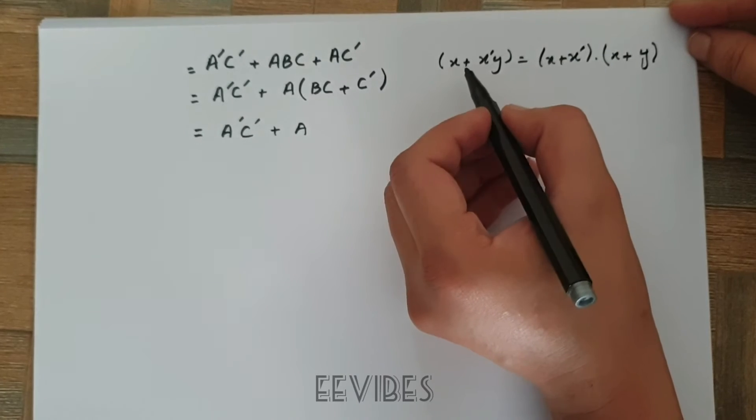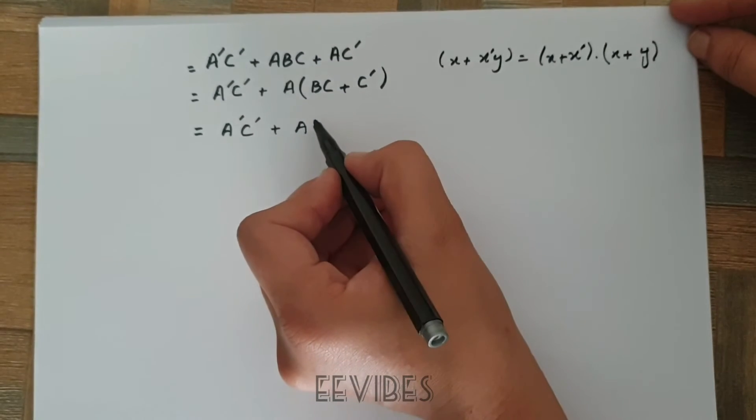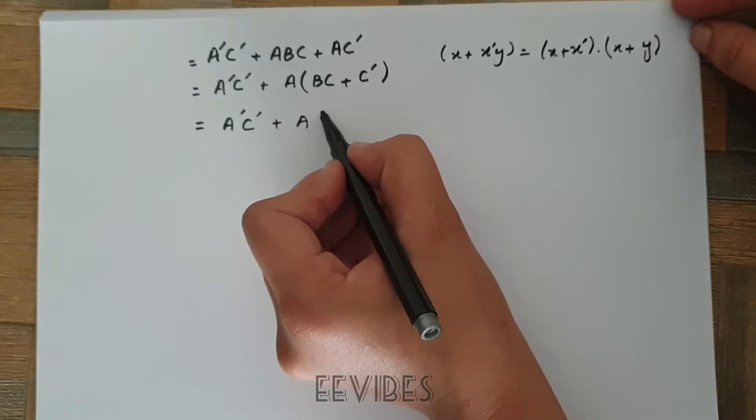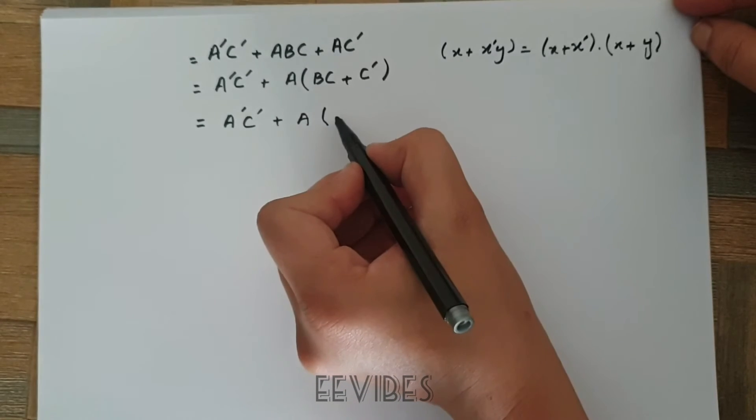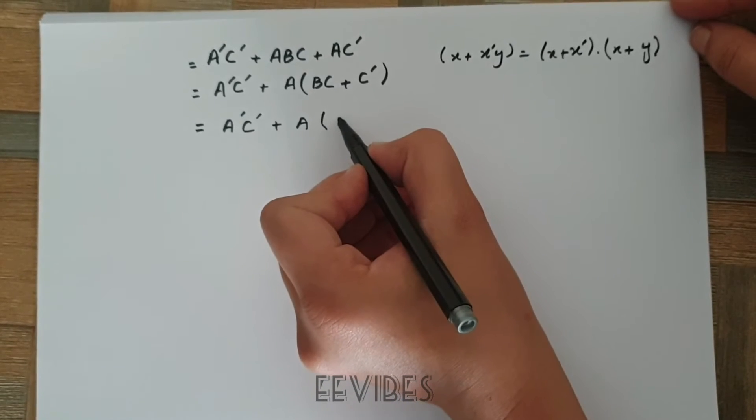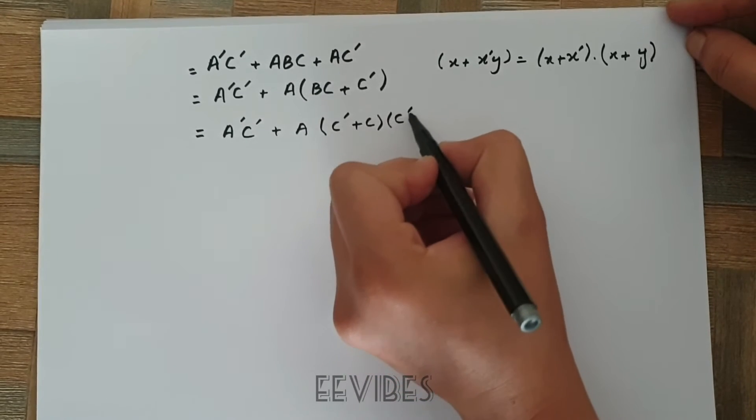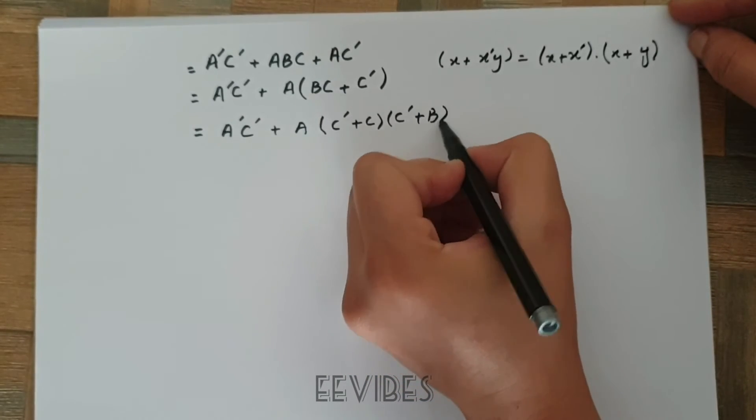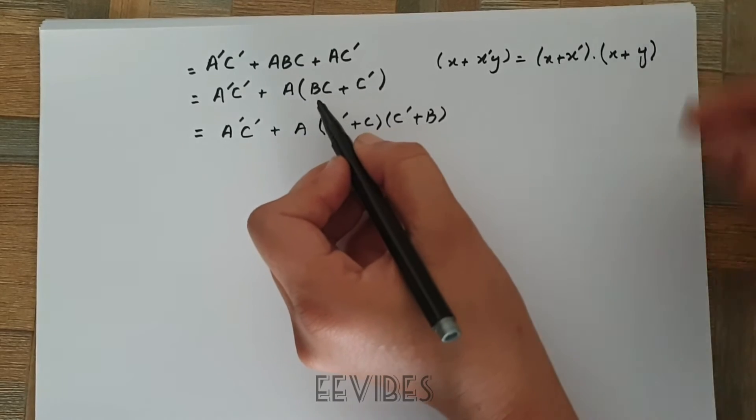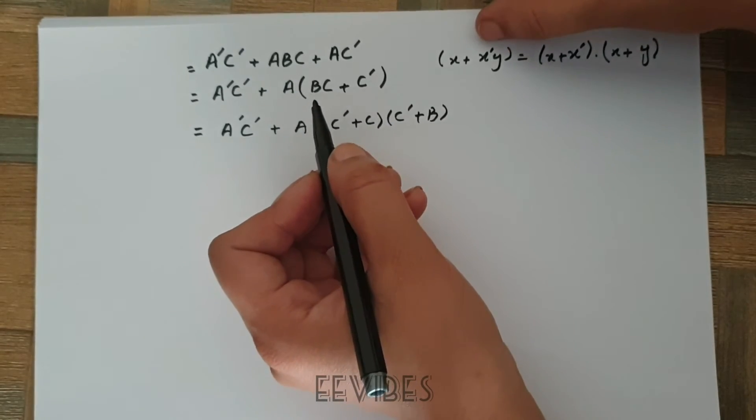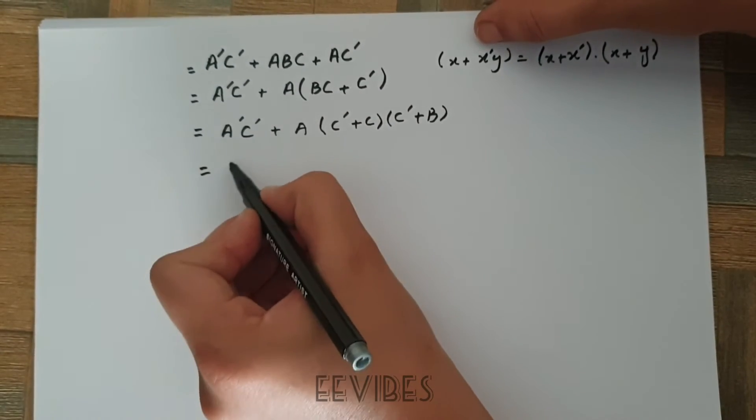The same will go for that and you will have C complement plus C into C complement plus B, as I have applied the distributive law over multiplication.